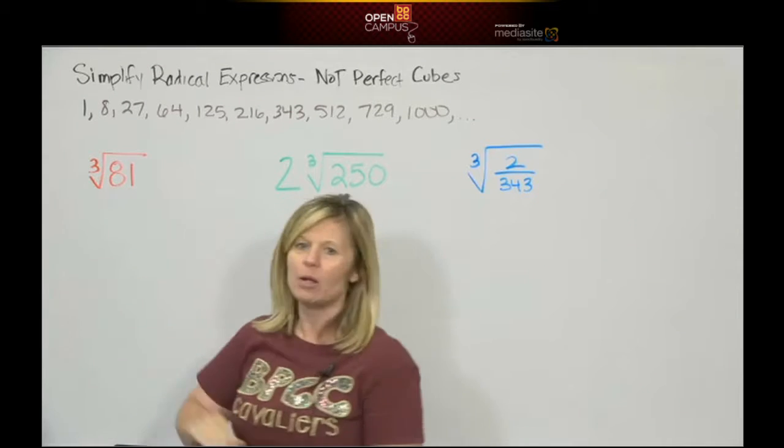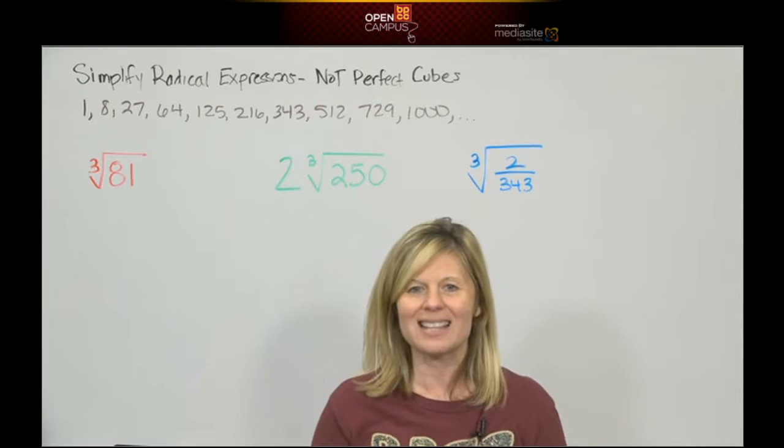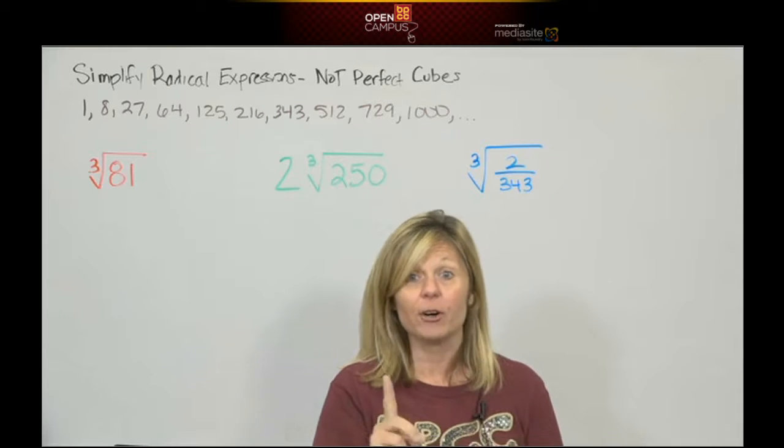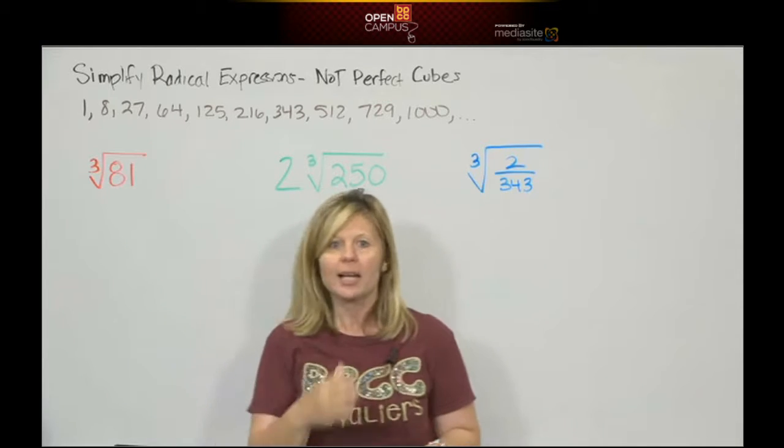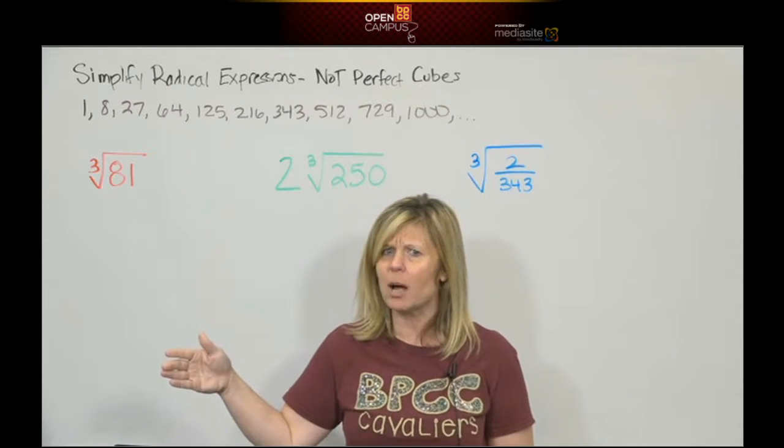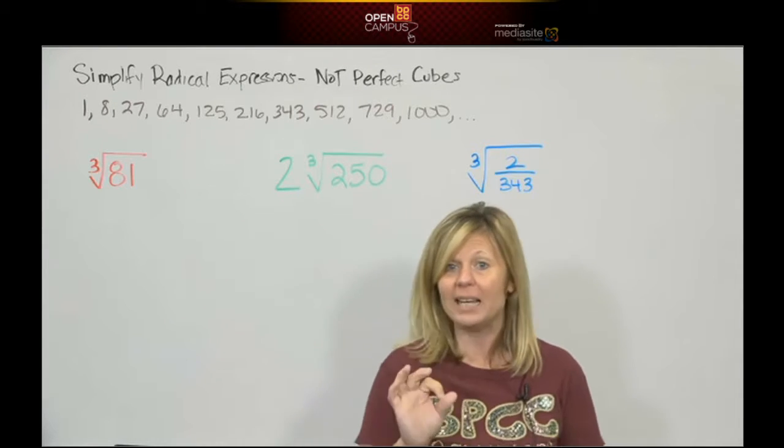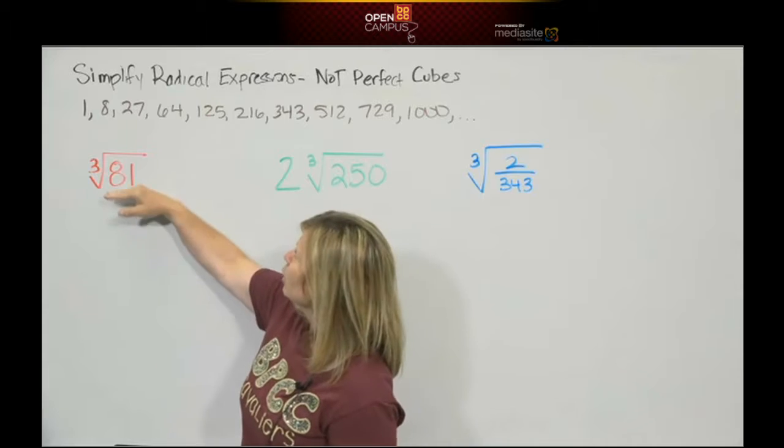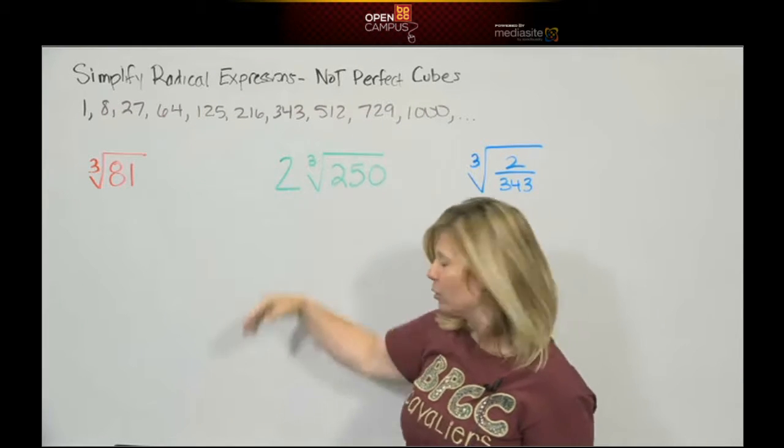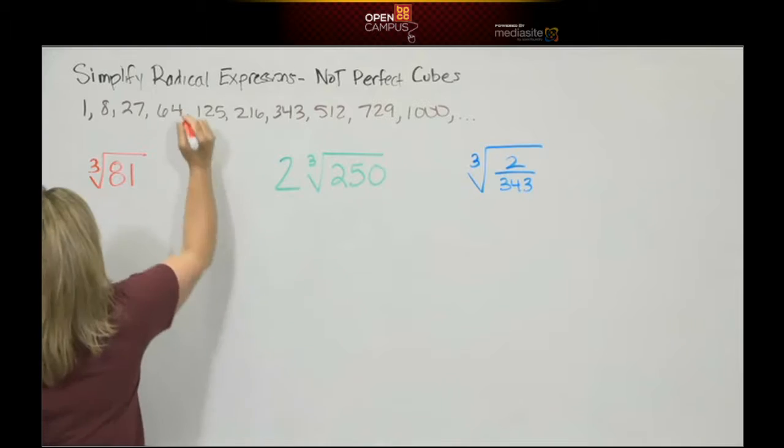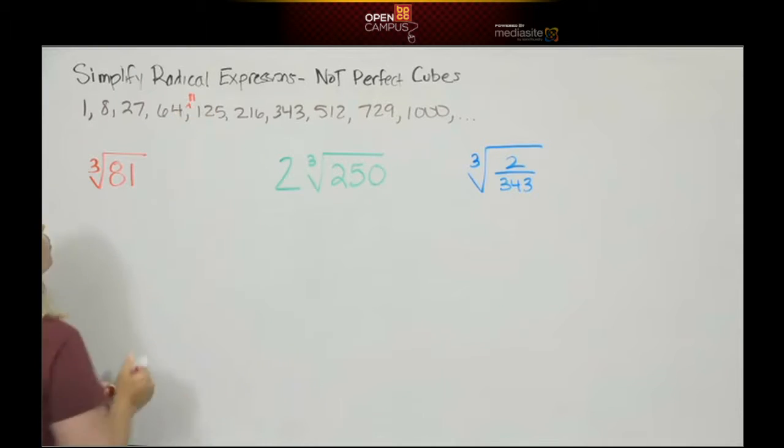I want to simplify the cube root of 81. I know what you're all gonna say, it's 9. Be careful, this is a cube root. Can you multiply 9 three times to make 81? No, you're thinking of a square root. If you look, 81 is not on this cube root list. We're trying to find the biggest perfect cube that factors into 81. If you know your times tables, 27 times 3 is 81.